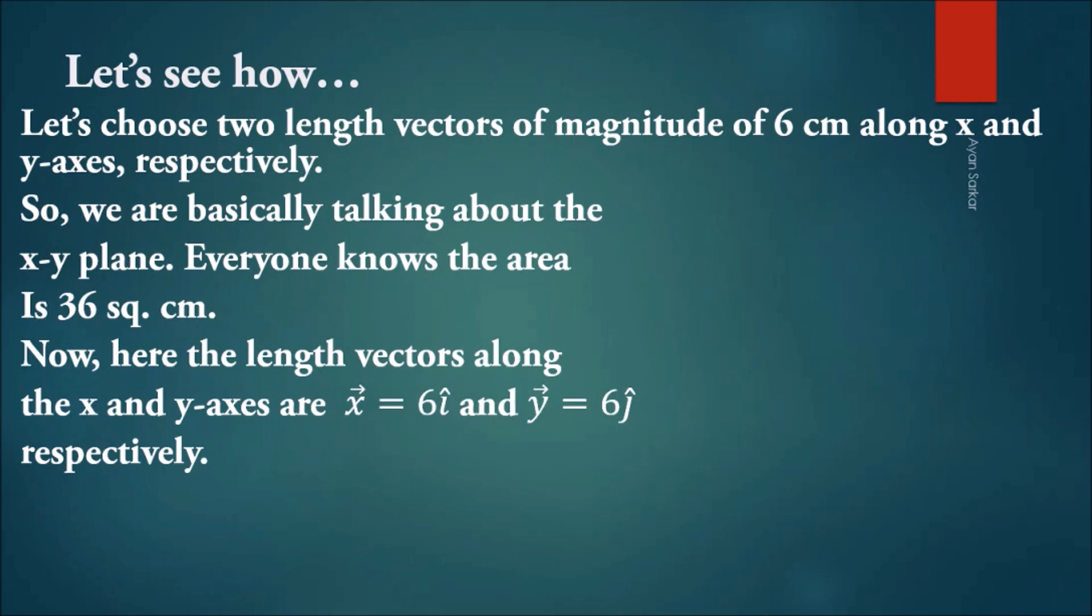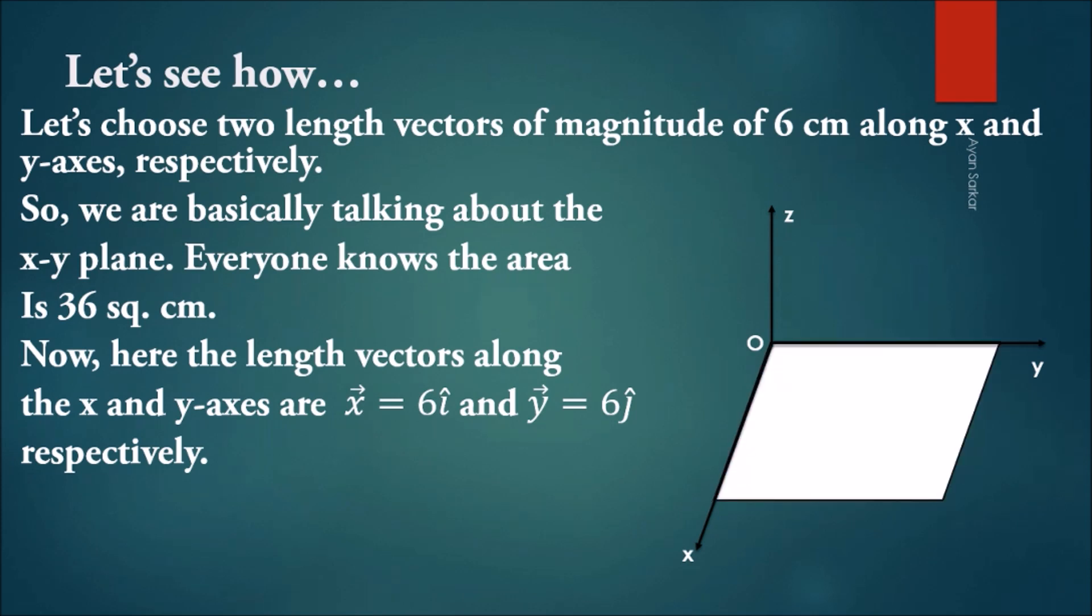Let's choose two length vectors of magnitude 6 centimeters along the x and y axes respectively. You can see the Cartesian coordinate system. We're speaking about the XY plane, and everyone knows the area is 36 square centimeters.